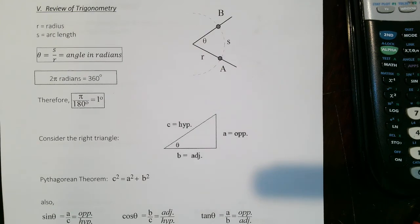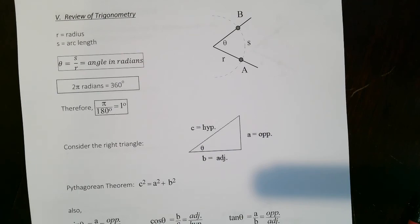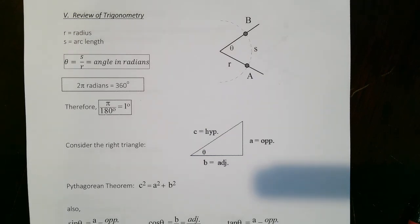Let's do a trig review. In ancient times, especially the Greeks, they were more geometry-focused than algebra. They were so fanatical about geometry that they actually worshipped geometric shapes. Pythagoras thought the most sacred geometric shape was the dodecahedron — and if you knew the secret of the dodecahedron, you knew the secret to the universe.